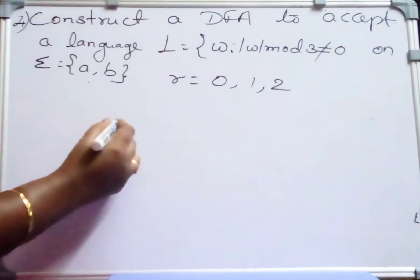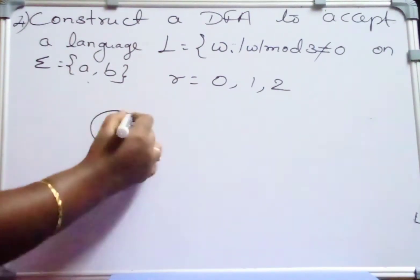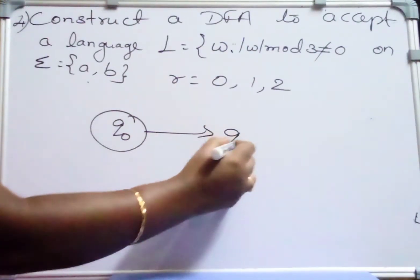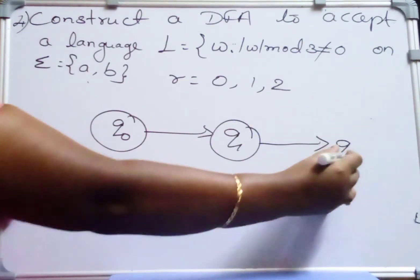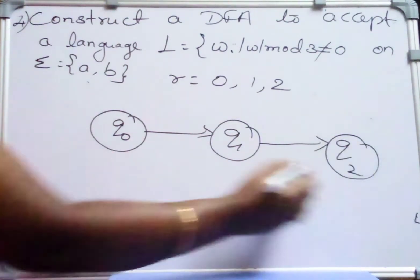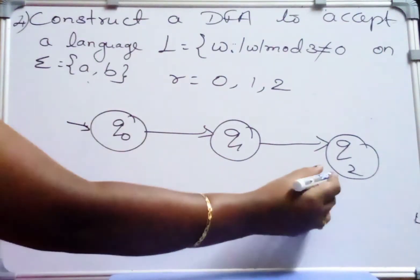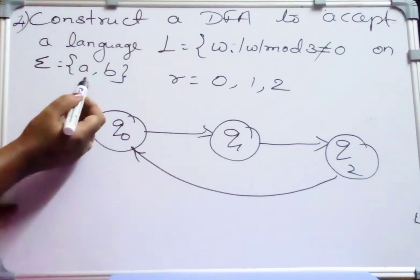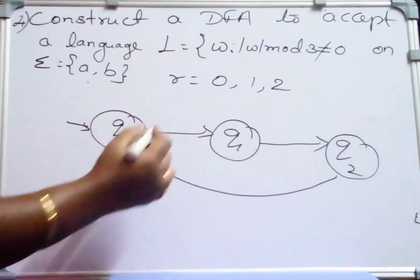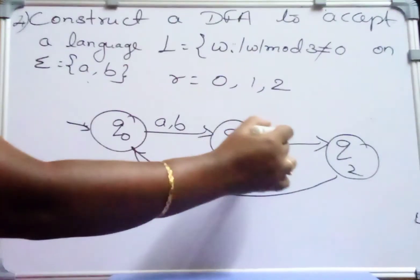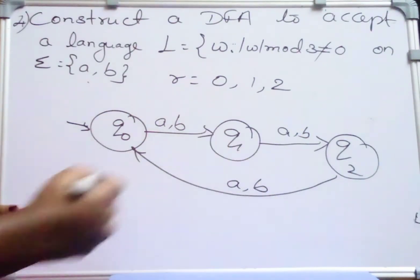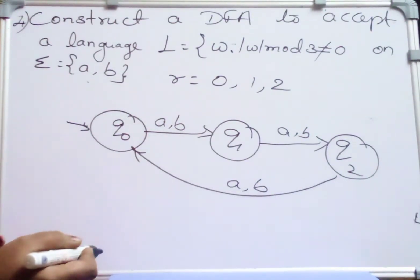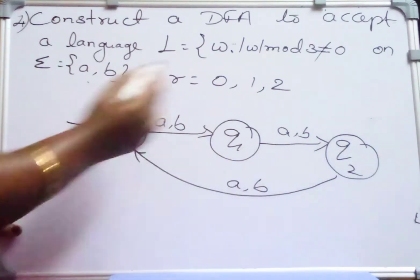So considering this, we write three states Q0, Q1, and Q2, and we should write the modulo problems always like a chain like this. And what is the alphabet set given here? A and B. So for any input A and B, irrespective of any symbols, we write the skeleton DFA like this. So A, B, three states like a chain.